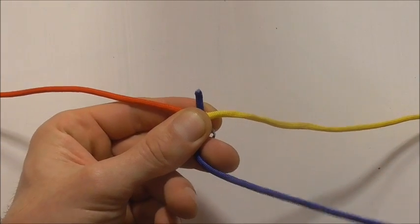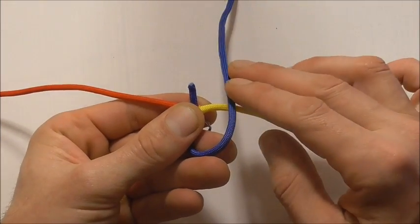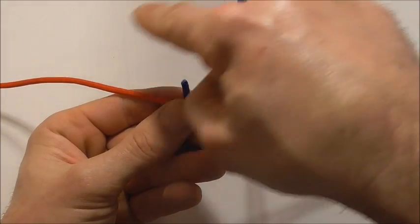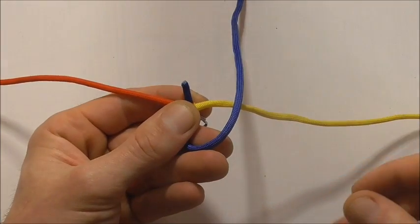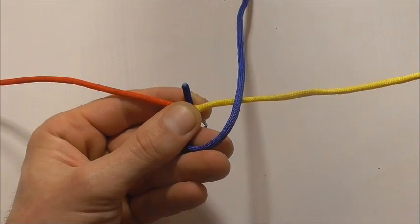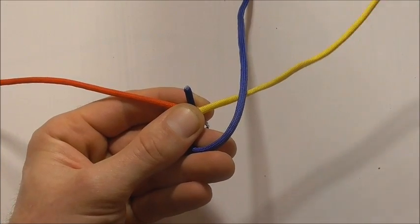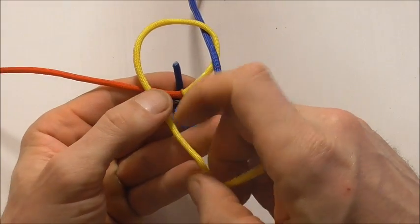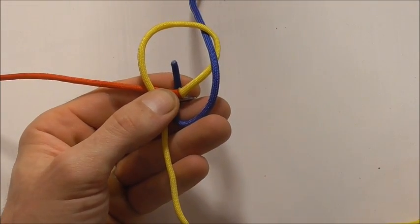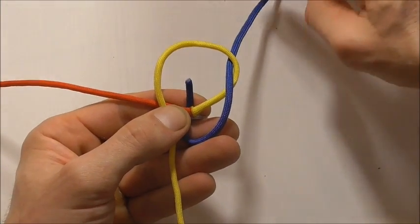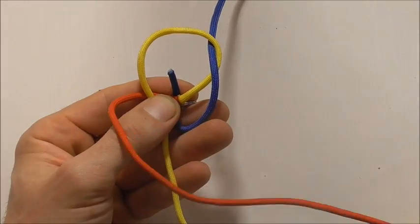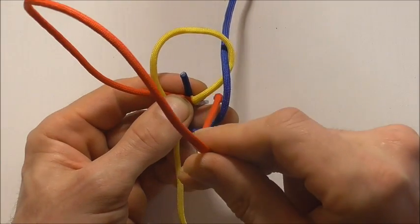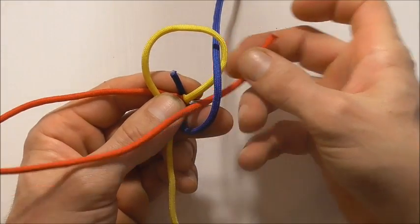I am going to take my single piece over that yellow piece going anti-clockwise. I will take this right hand piece right around over that red and then I am going to take this red piece over this yellow piece and down through that loop there.